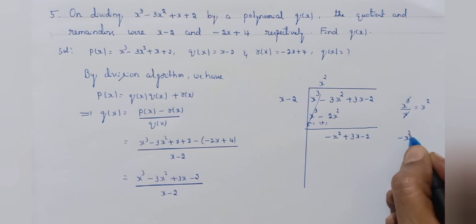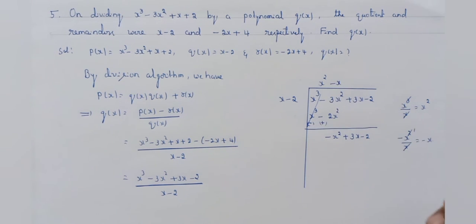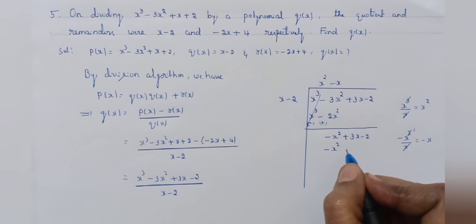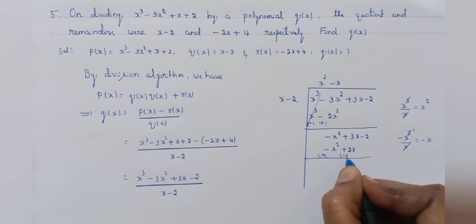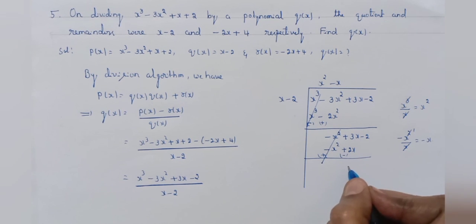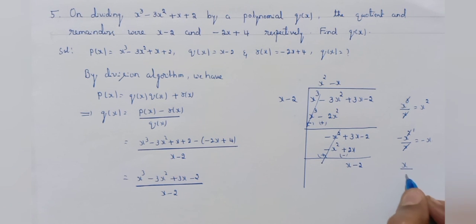Now divide minus x square by x — x gets cancelled, you get minus x. Write minus x in the quotient. Multiply x minus 2 by minus x: minus x into x is minus x square, plus into minus minus is plus 2x. Change the signs. Plus x square minus x square get cancelled. Plus 3x minus 2x is x minus 2.